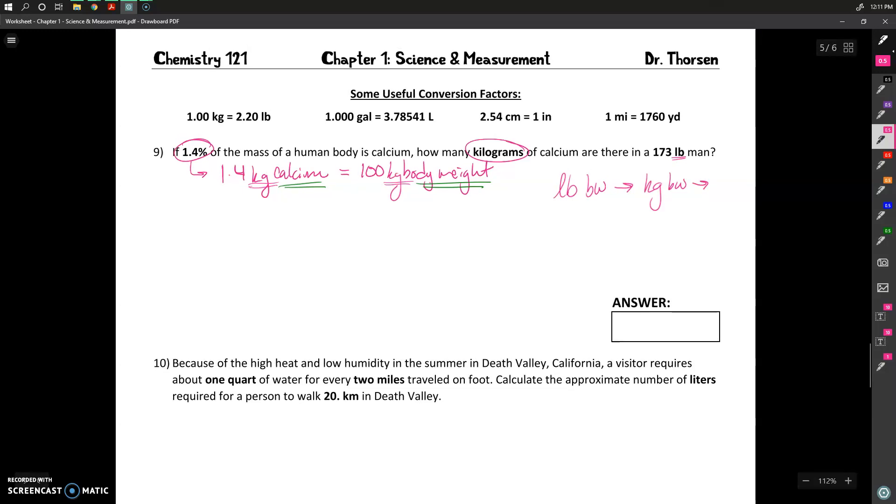Once I have the kilograms of body weight for this 173 pound man, then I can get to the kilograms of the calcium that I'm going to have. So my roadmap here is to go from pounds to kilograms in terms of the body weight, and then to use this percentage to take my kilograms of body weight into kilograms of calcium.